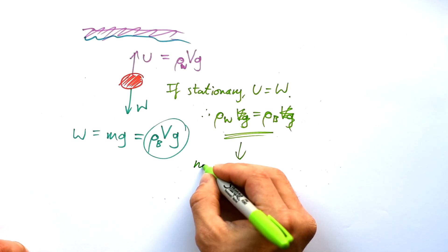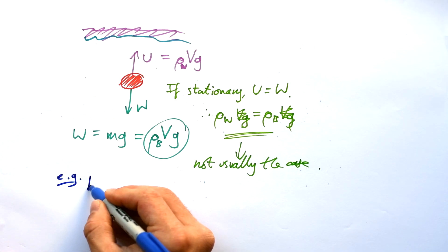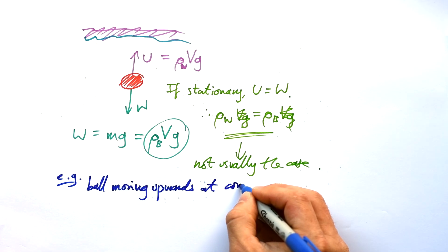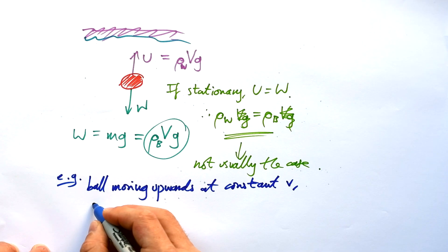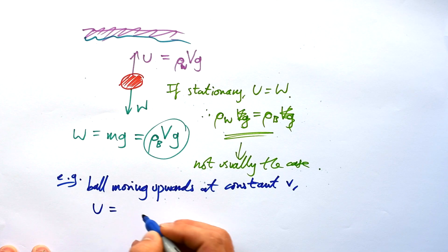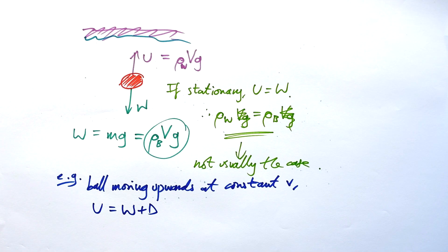But this is not usually the case. What will happen usually is if the ball is moving upwards at a constant speed, what do we know to be true? Well, we said that we have the upthrust. But then we have that is equal to the weight and the drag, which is also pulling downwards.